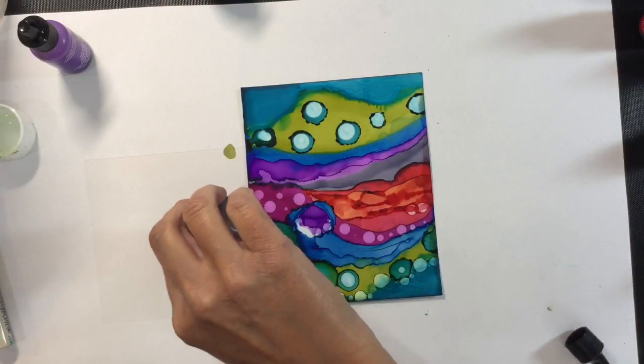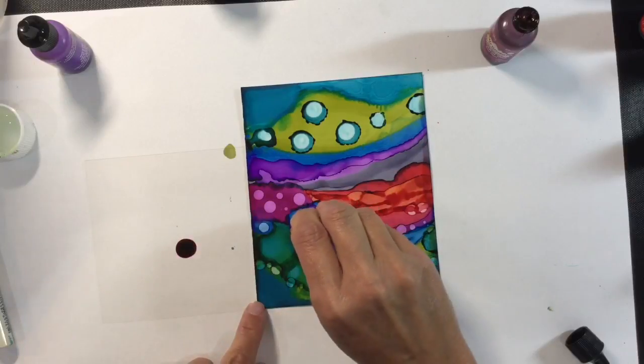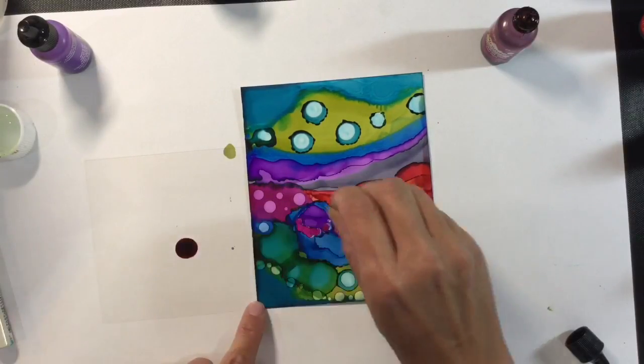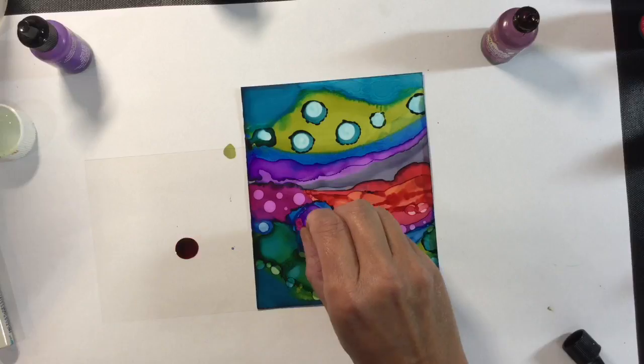Now I decide I'm still not quite happy with that little part of the abstract so I add some wild plum to a piece of acetate and add it underneath the twilight purple using the flat end of that pin. And that to me just looks much better.